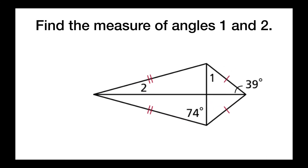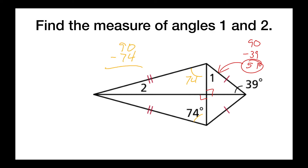This will be our last question about kites — we're finding the measure of angles 1 and 2. It's helpful to remember that all diagonal intersections are 90 degrees. For angle 1, we do 90 minus 39, which gives us 51 degrees. For angle 2, we note that this part is congruent to 74, so 90 minus 74 gives us 16 degrees.